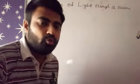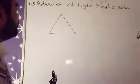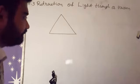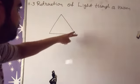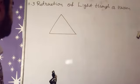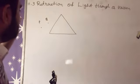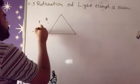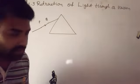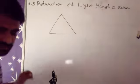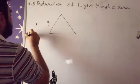Our topic is refraction of light through a prism. Here we have one prism - a triangular equilateral prism which we place on a cardboard. It has two sides facing us and towards the board. We draw the prism outline on the paper, then put two pins P and Q. After removing the pins, we draw a line through them, which is called the incident ray.